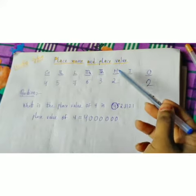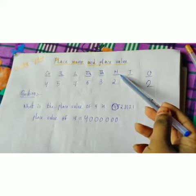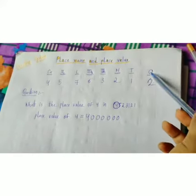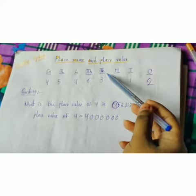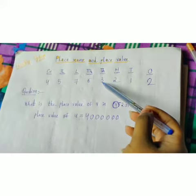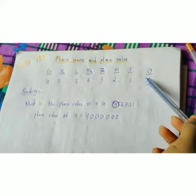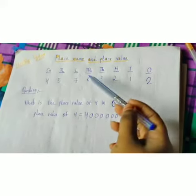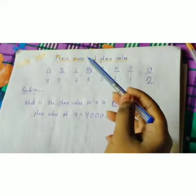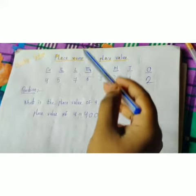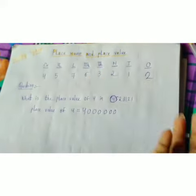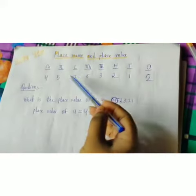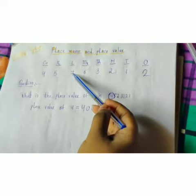Two is in the hundred place, so the place value will be two hundred. Three is in the thousand place, so the place value will be three thousand. Six is in the ten thousand place, so the place value will be sixty thousand.